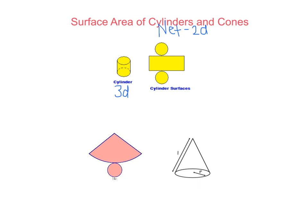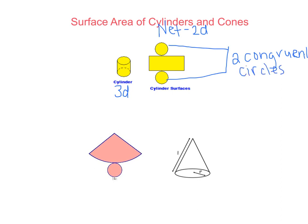So first of all I see two congruent circles — that's the first two shapes — and then there is a rectangle. So three shapes make up the net of a cylinder.